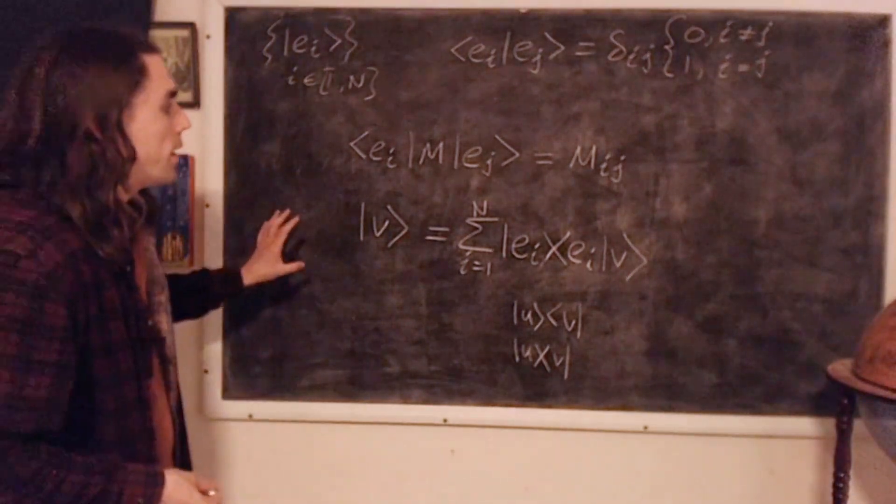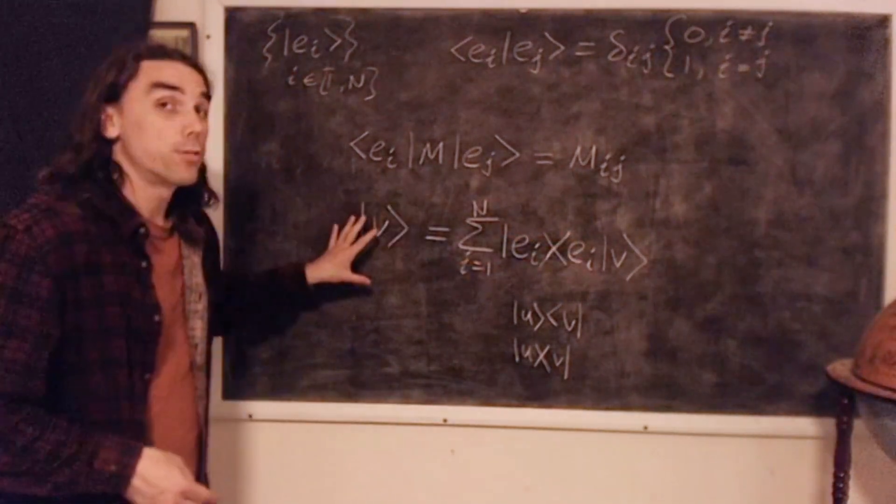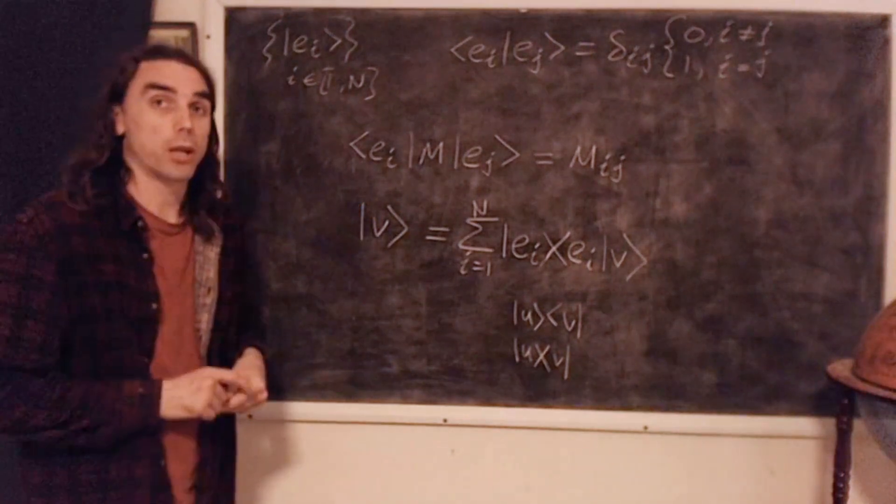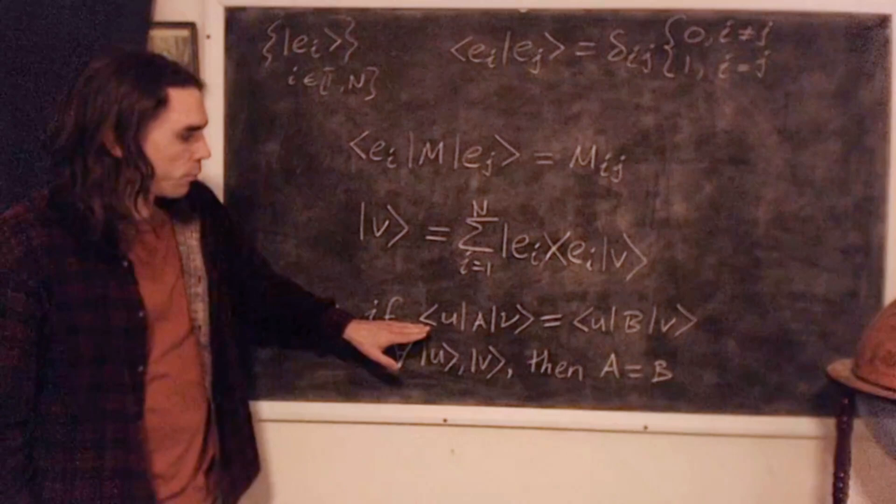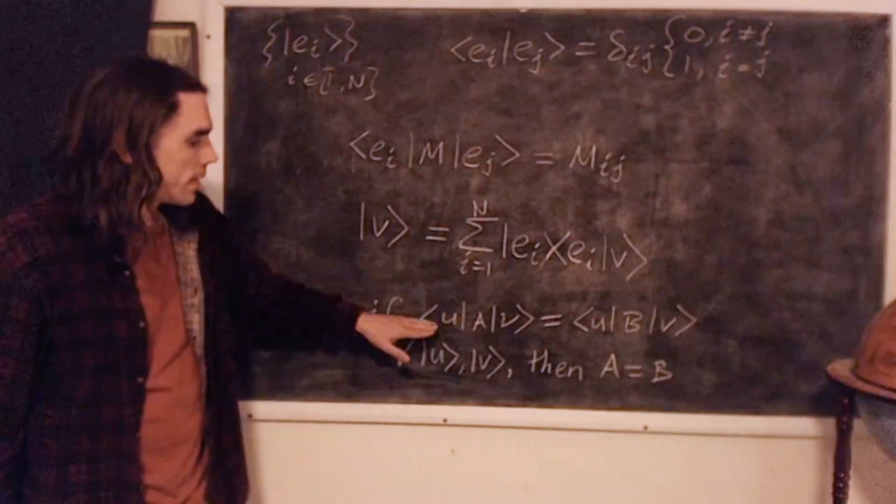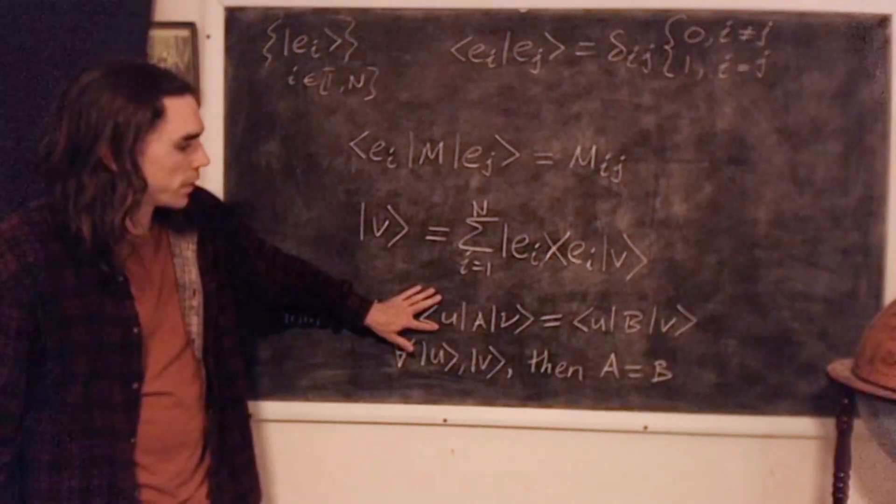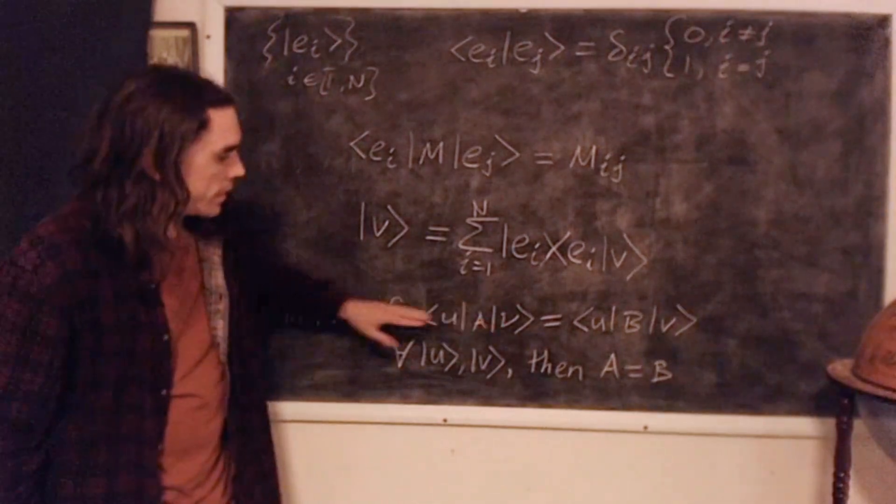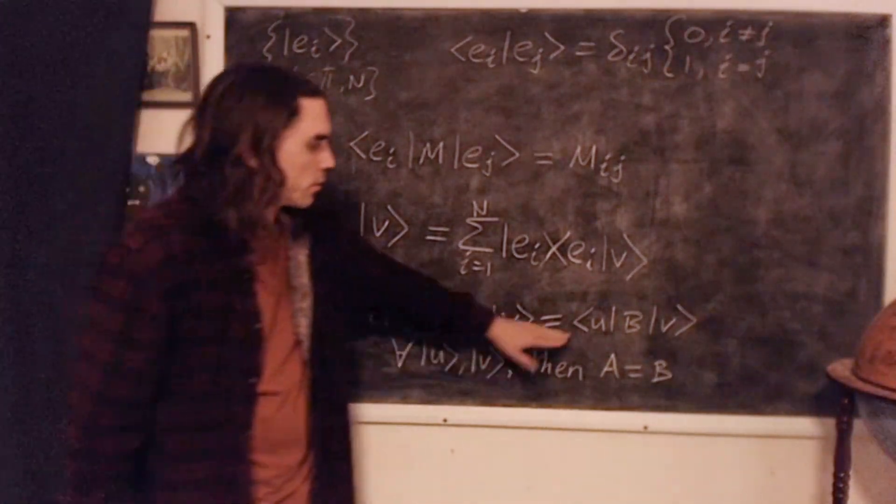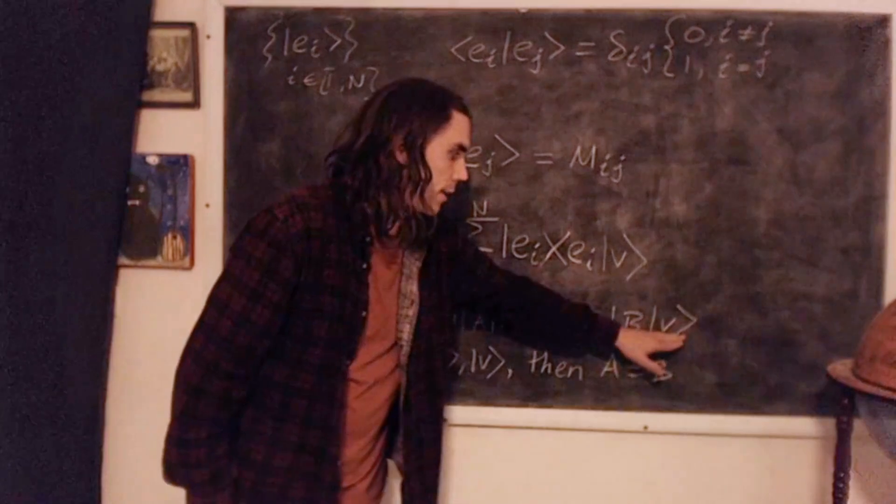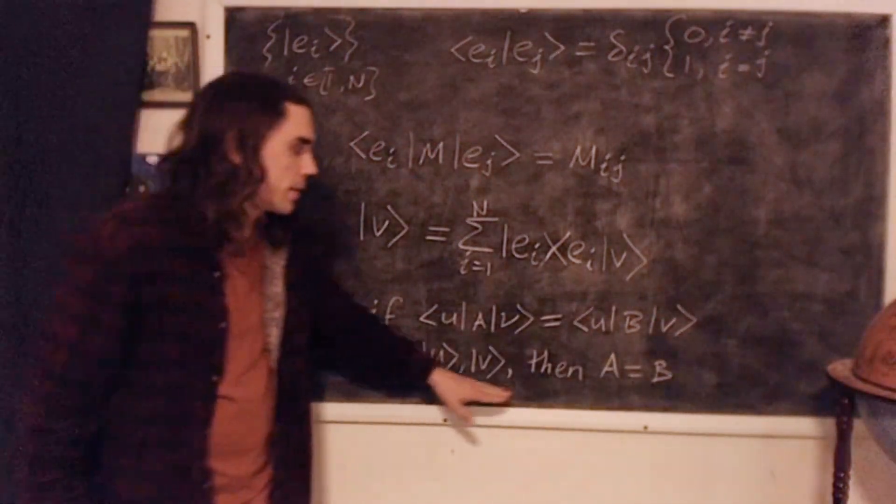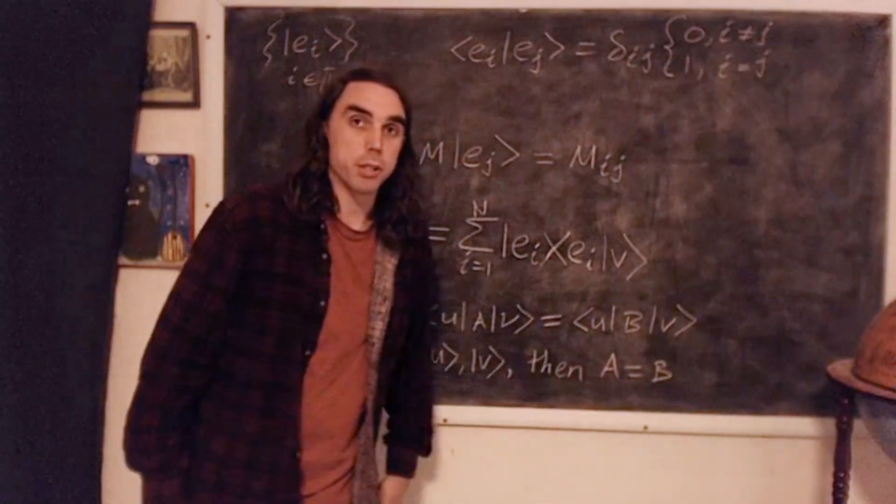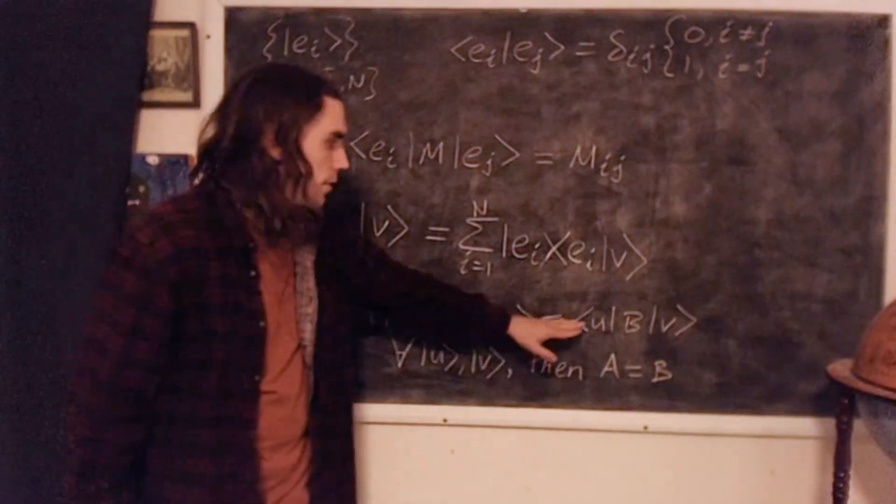Okay, so in order to prove a very useful relation, we need to use the following theorem. If we have two matrices, A and B, and the inner product, well, if A acts on V, and we take the inner product with U, and that thing is equal to U inner product B acting on V, for all U and V arbitrarily, then that means that the matrix A is equal to the matrix B. This should hopefully make some intuitive sense.